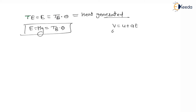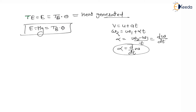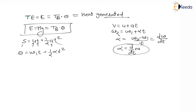For angular motion, angular displacement theta = omega 1·t + ½·alpha·t². Here, theta is angular displacement, omega 1 is initial angular velocity, t is time, and alpha is angular acceleration. We can also substitute alpha = (omega 2 − omega 1)/t into this equation.